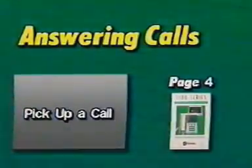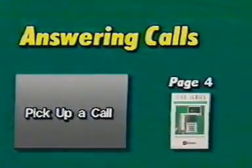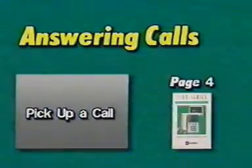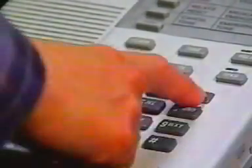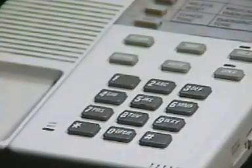Turn to page four. Here's an example of how to pick up a call that is directed to another station. To pick up a call, lift the handset at the present location and press pound, seven, three. You will now receive the call directed to the other location.